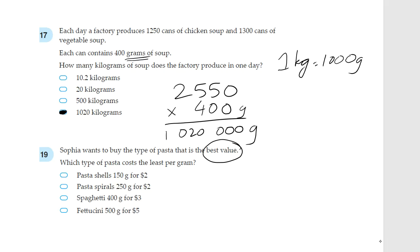To get from 2 dollars to 1 dollar, we need to divide by 2. So, 150 divided by 2 is 75 grams for 1 dollar. Now here, 2 dollars to 1 dollar, we'll divide by 2 again. This would be 125 grams. Because half of 250 is 125. So, for pasta spirals, you get 125 grams for 1 dollar.